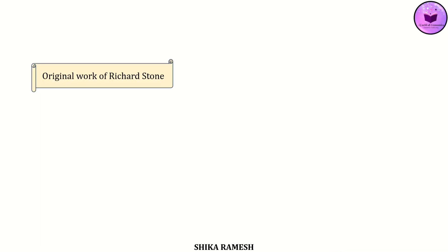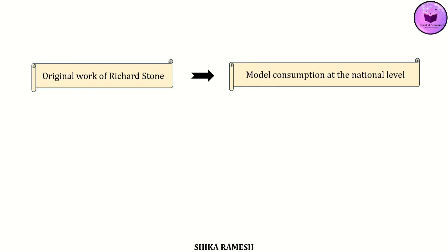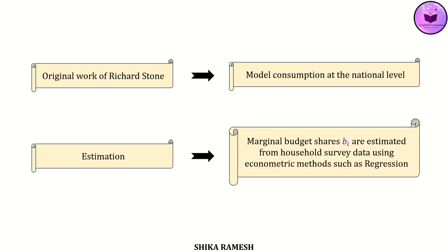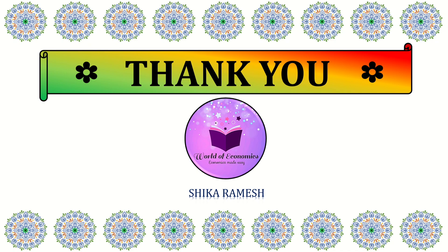In the original work of Richard Stone in 1954, the idea of LES was to understand not just the consumption behaviour of one household, but to model consumption at the national level. The same logic can be used to explain the aggregate consumption behaviour of an entire population. In practice, parameters like the marginal budget shares b_i are estimated from household survey data using econometric methods such as regression. I hope you have got a clear picture of the concept of linear expenditure systems. If you liked the video, do subscribe to my channel and share the videos with your friends. Thank you!